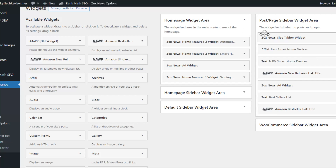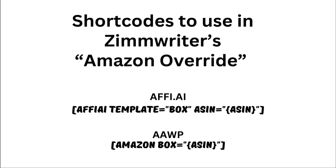I haven't done any customizing of the widgets at all. The only thing I did on AFFI is match the color to my color scheme on Zox. That's how easy it is to put the widgets in there. These are the shortcodes, and you'll need to be very exact on this — you do want to put quotes and do exactly as shown, otherwise it's not going to work. If you're using the AAWP plugin, this is your shortcode. If you're using AFFI, this is your shortcode.